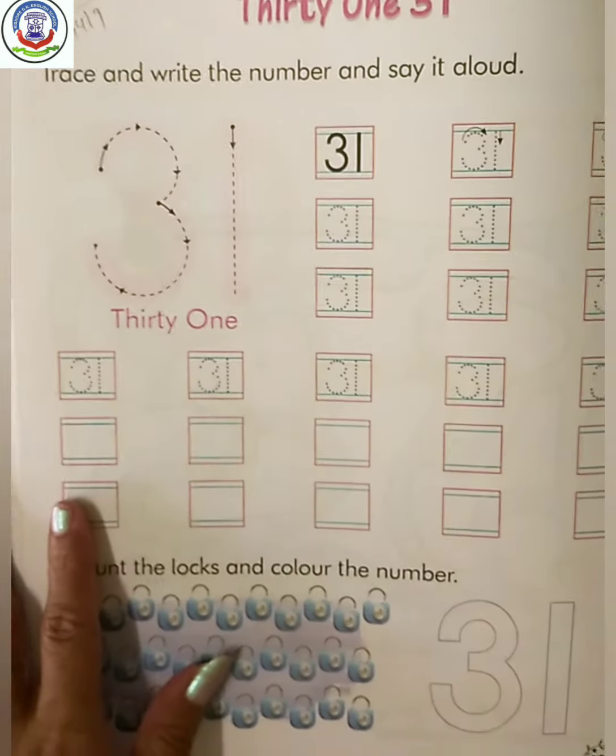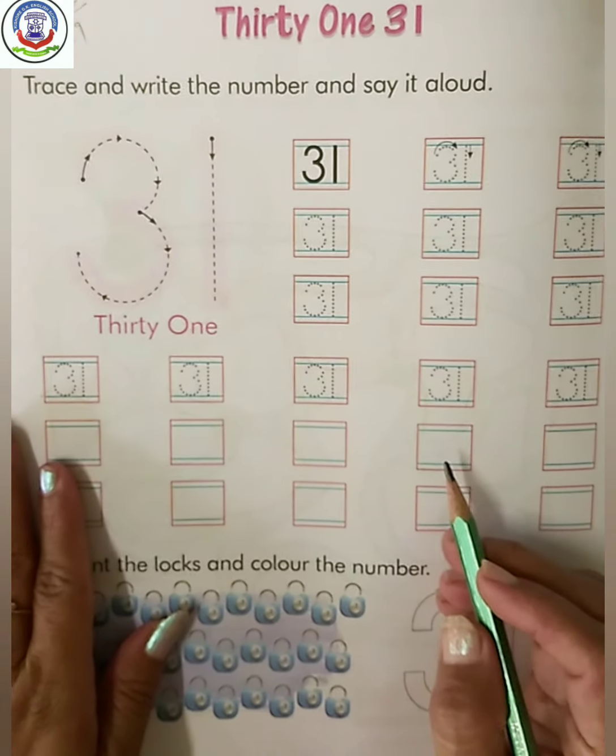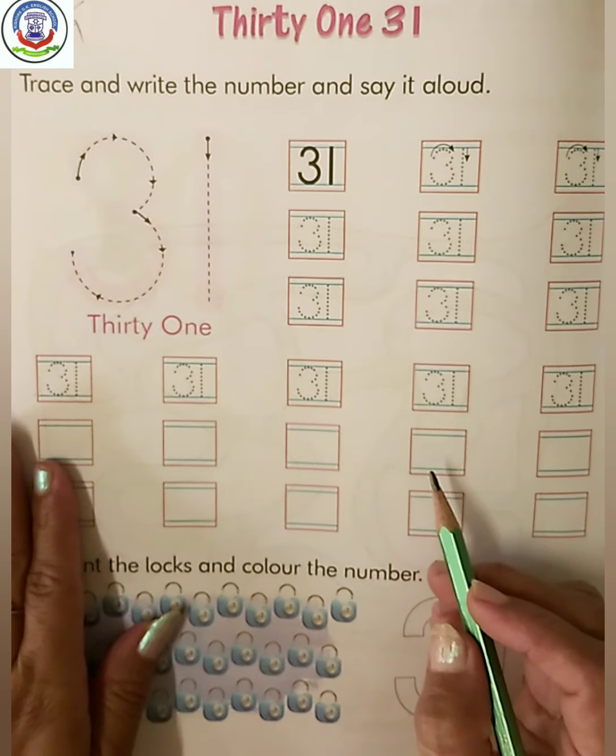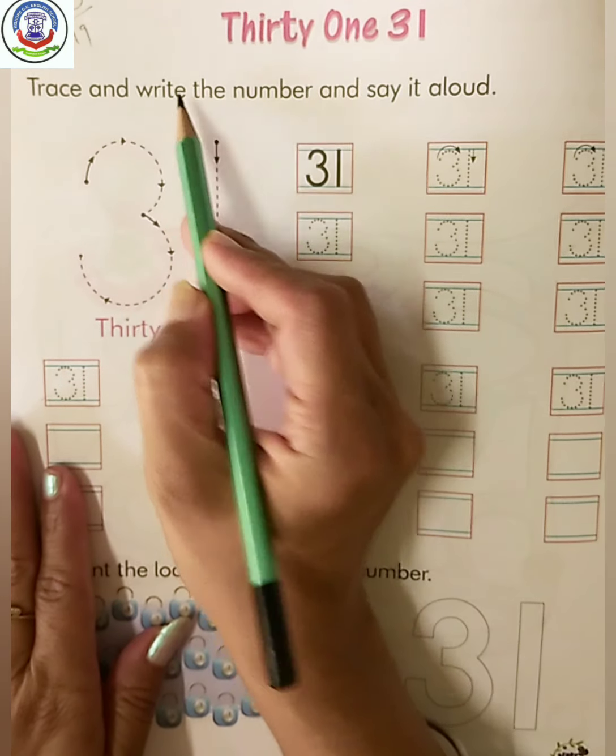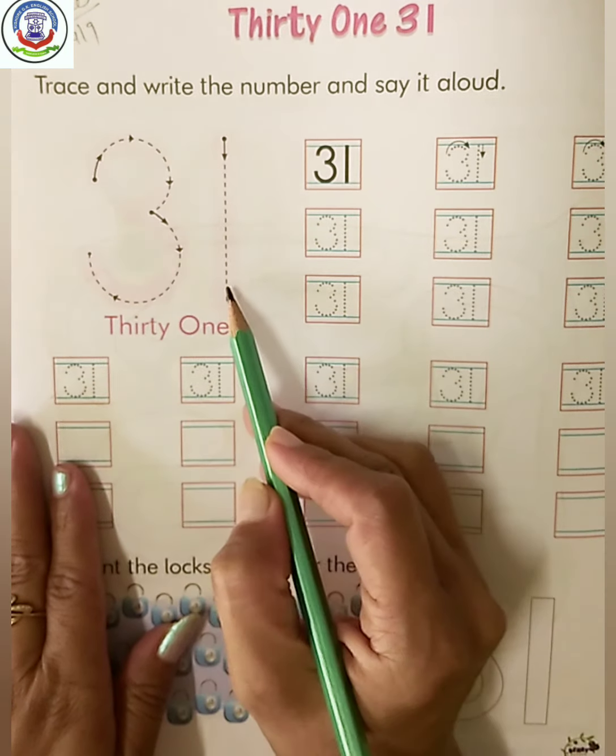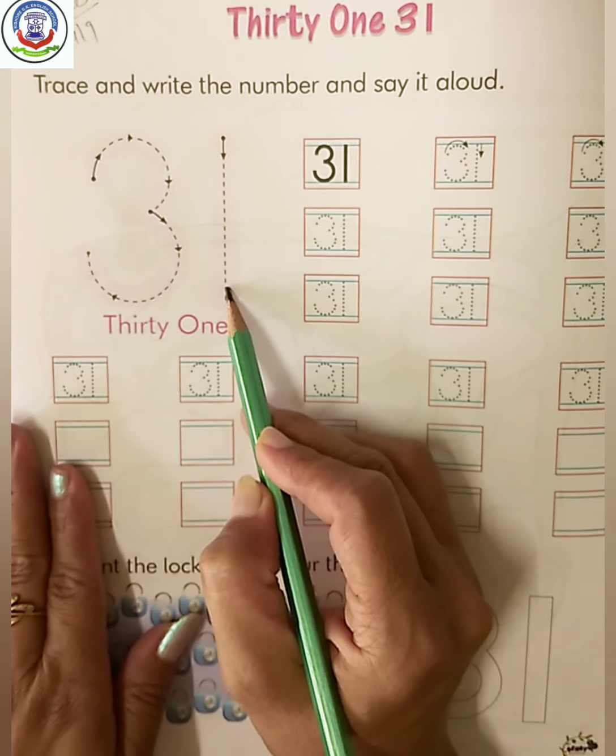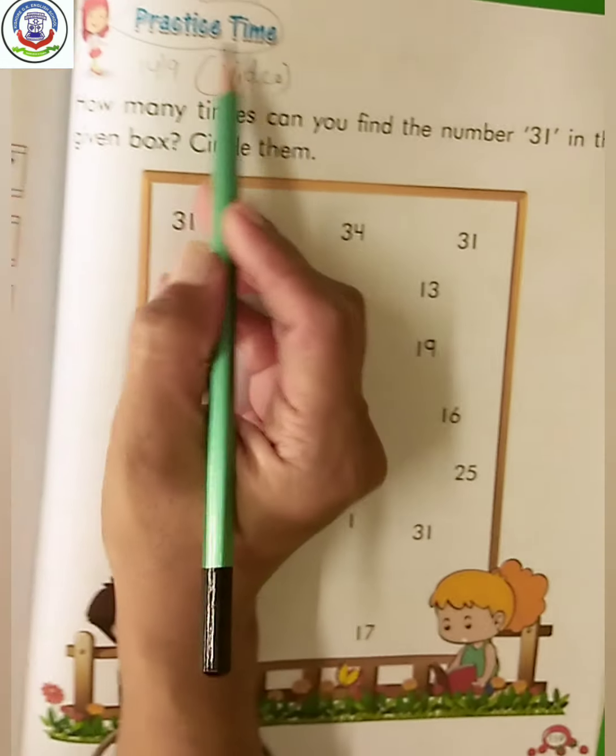Till now we have learnt numbers 1 to 30 and today you have traced and written number 31. Now it's practice time.